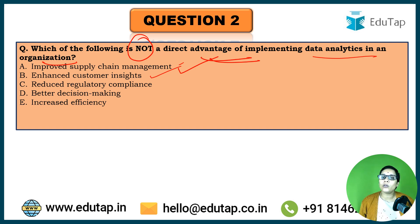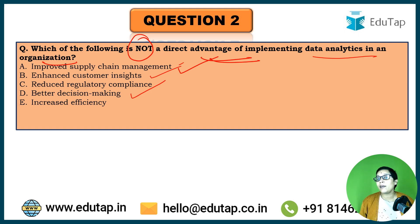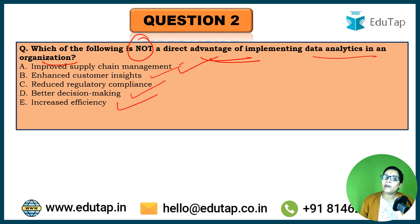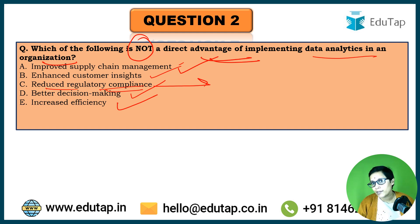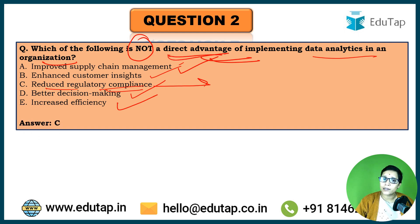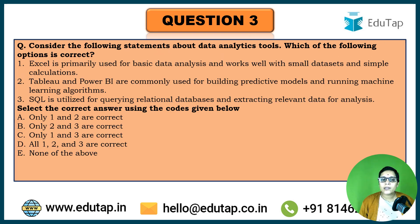Better decision-making is obviously an advantage once we know the loopholes and understand the insights. Increased efficiency will lead to positive returns and revenue, so that is also an advantage. Reduced regulatory compliance is not a direct advantage — it may be an indirect impact of other decisions, but it is not directly linked. So here C is the correct answer.